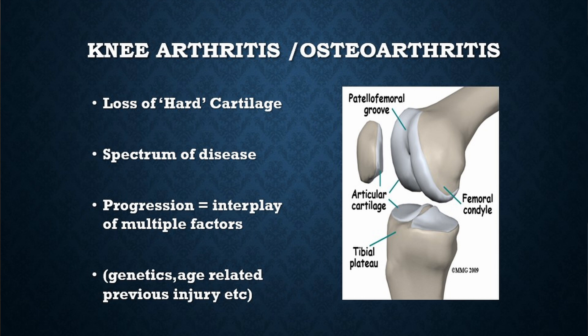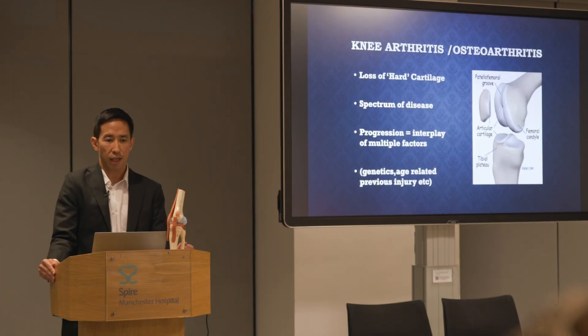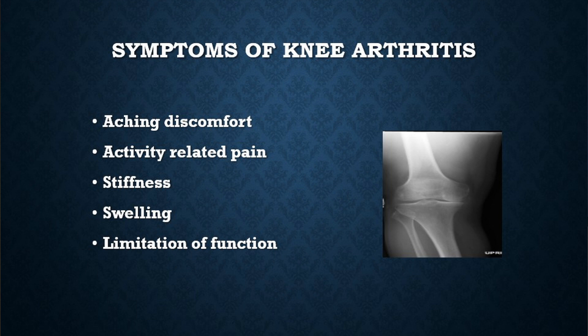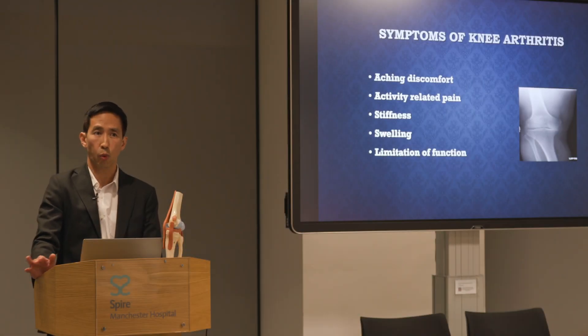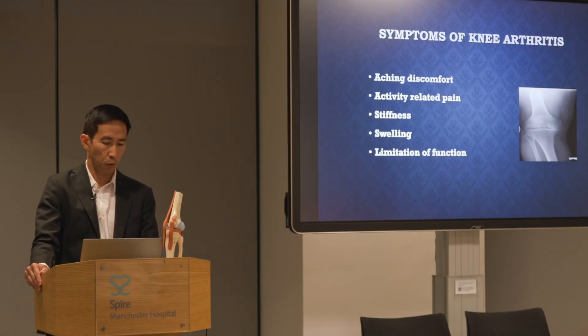The progression of knee osteoarthritis is a complex interplay of various factors, from genetics or constitutional predisposition, to previous trauma, and the aging process. Somebody who has knee osteoarthritis typically presents with a combination of symptoms: an aching discomfort, activity-related pain, stiffness or heaviness around the knee joint, with or without swelling. These symptoms affect your ability to function well — your walking distance and mobility are affected.